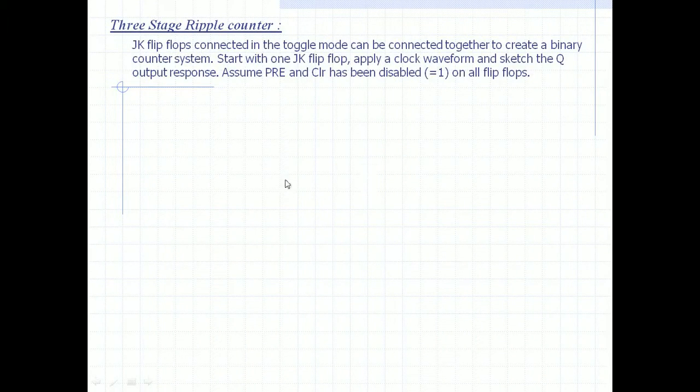Let us talk about the three-stage ripple counter. We'll see the waveforms and how it is made. We'll use JK flip-flops connected in toggle mode, meaning one and one is given to J and K, and we'll create a binary counter system. Start with one JK flip-flop.